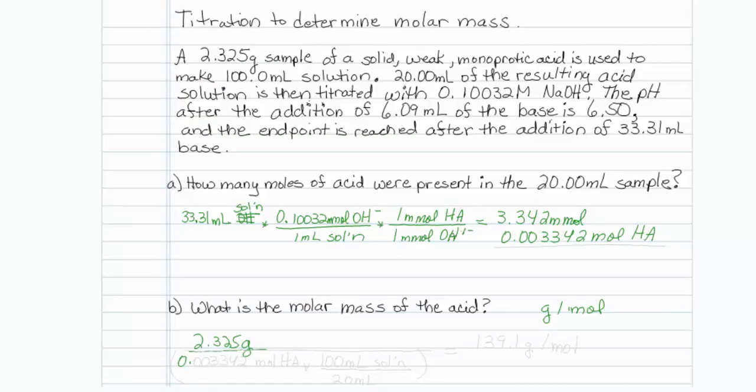It is 0.003342, and that is moles of HA, but remember that there are 100 mils of the entire solution over the 20 mils that we titrated. So we do have to make sure that we take into account the extra moles. So when I put that into my calculator, I wind up with 139.1 grams per mole. That's that part.